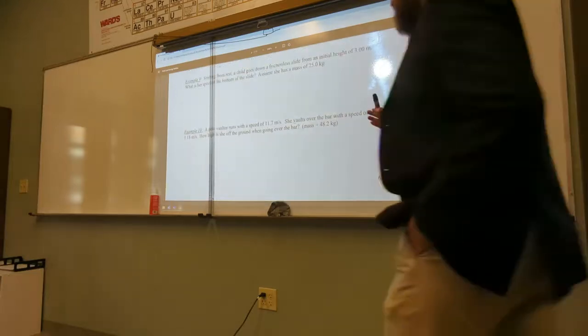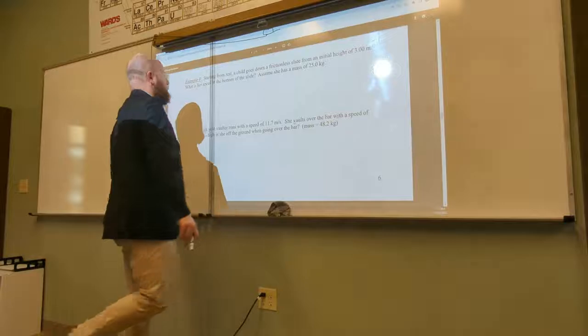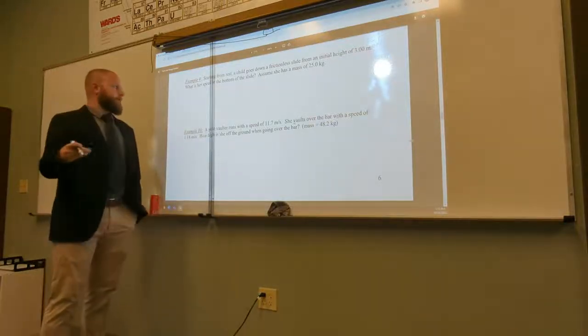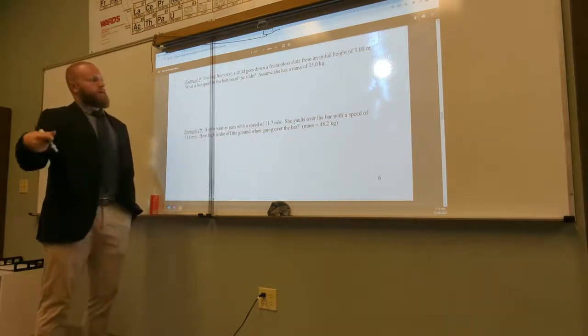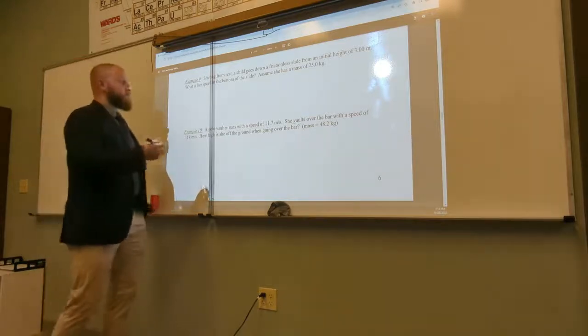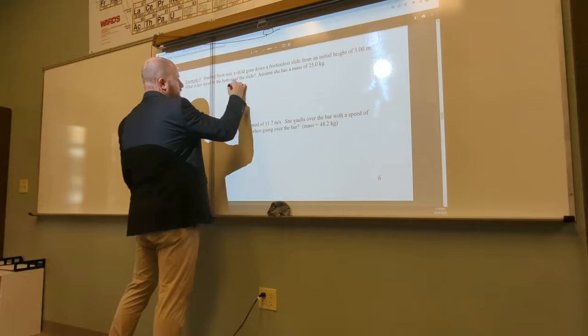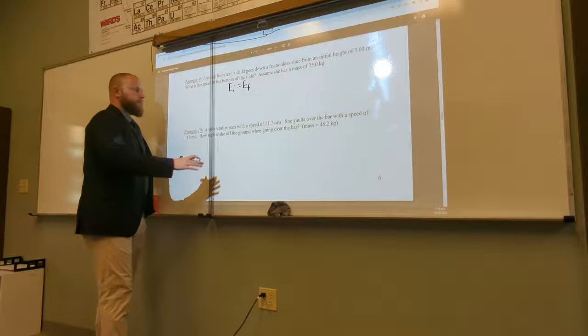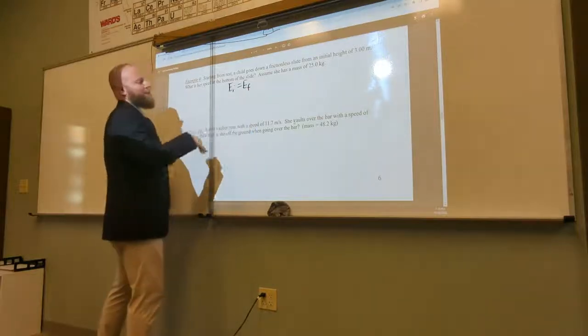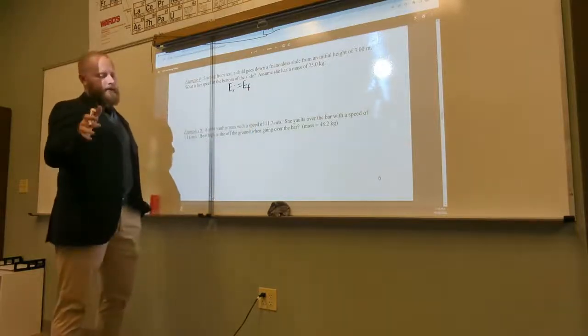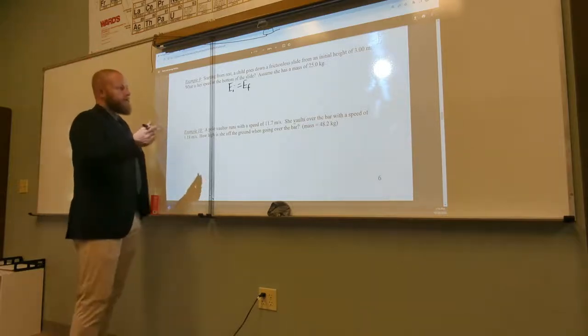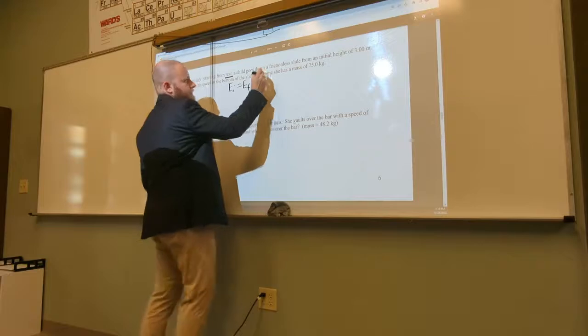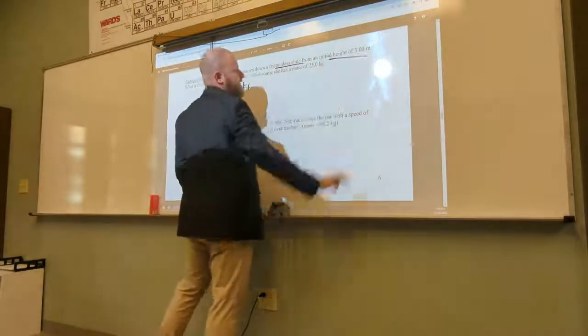Okay, so we have example number nine. Starting from rest, a child goes down a frictionless slide from an initial height of three meters. What is her speed at the bottom of the slide? So I start with EI equals EF. Now, what I need to do for both the beginning and the end is write the types of energies I have in this scenario. So at the beginning, she is starting from rest, and she's going down this slide with initial height.